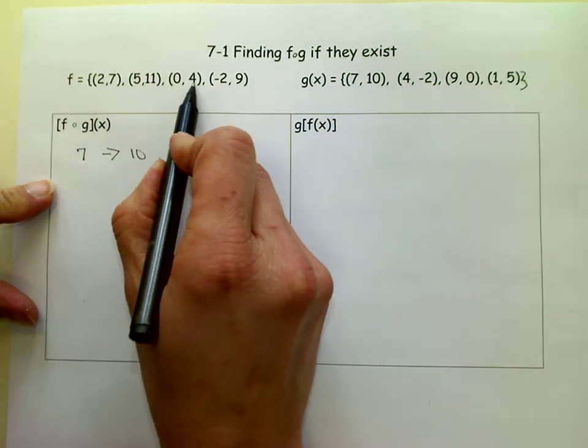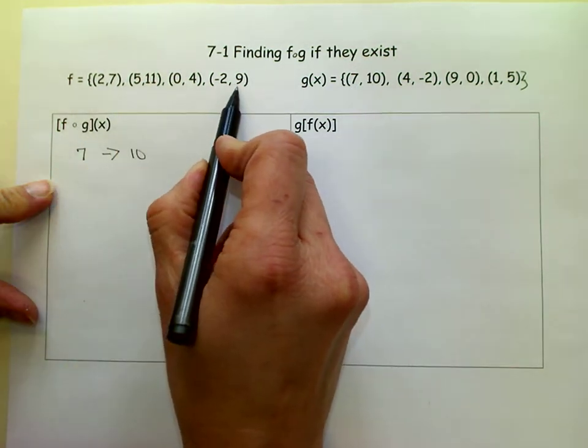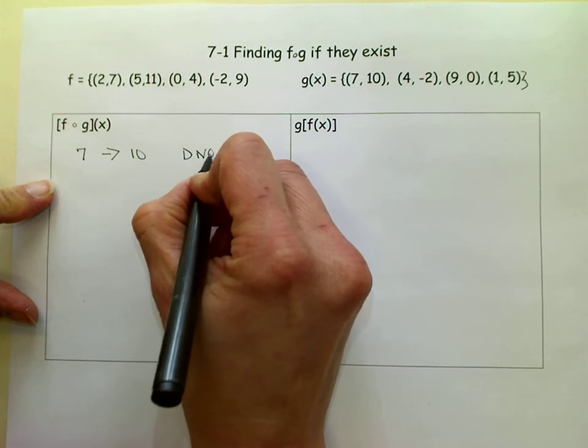So then we go over to the f function and we look for a 10. There's no 10, so this does not exist.